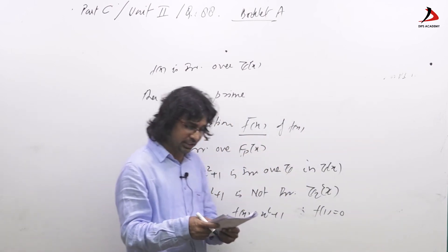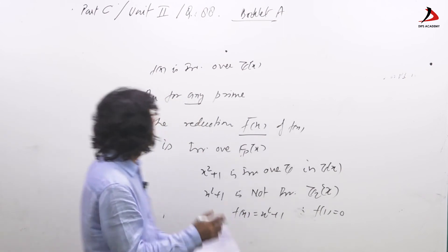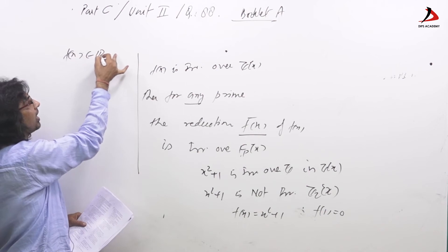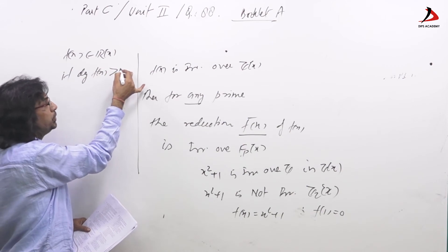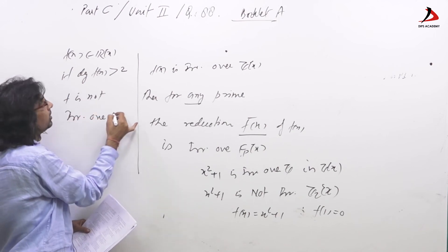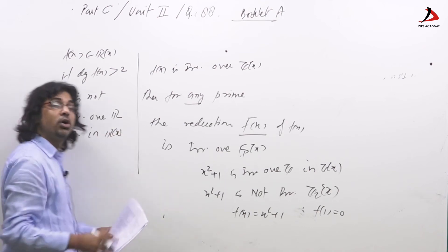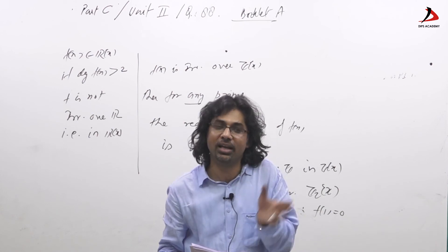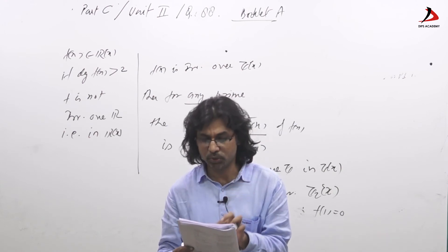Similarly, option four says f(x) is irreducible in Z[x] then it is irreducible in R[x]. We know that if f(x) belongs to R[x] and the degree of f(x) is greater than 2, then f is not irreducible over R. Any polynomial of degree greater than or equal to 3 in R[x] is reducible and can be written as a product of linear and degree-2 polynomials. So option four is also incorrect.